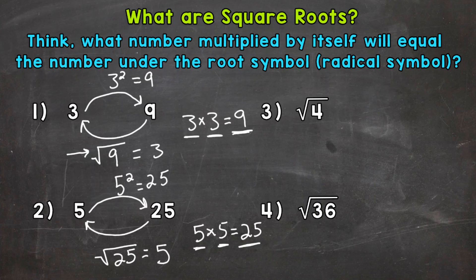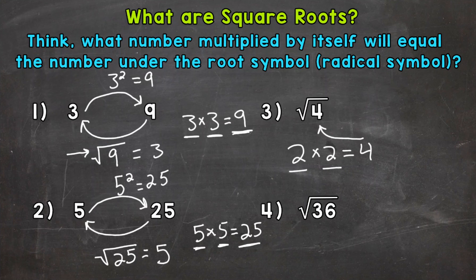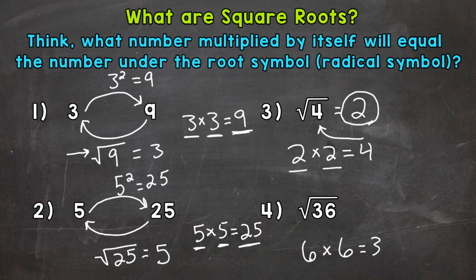Let's move on to numbers 3 and 4, and we're just going to take the square root of these numbers. For number 3, we have the square root of 4. We know 2 times 2 equals 4, so the square root of 4 is 2.